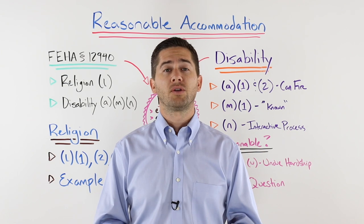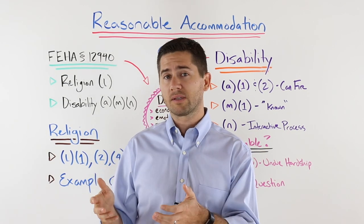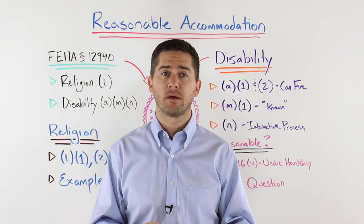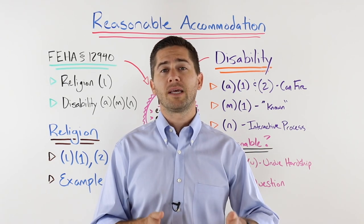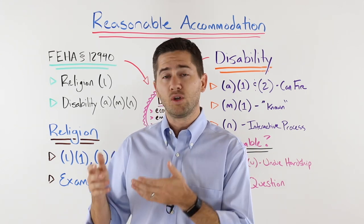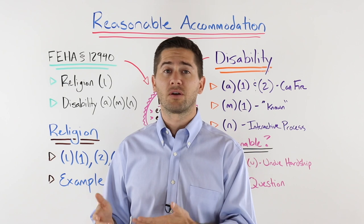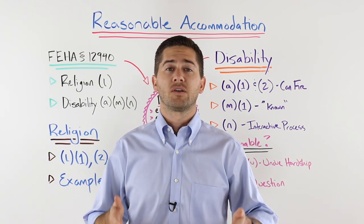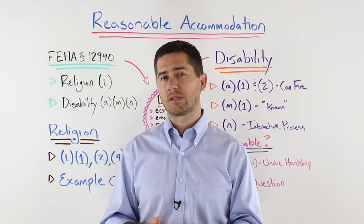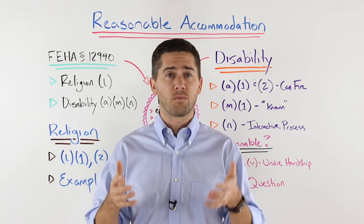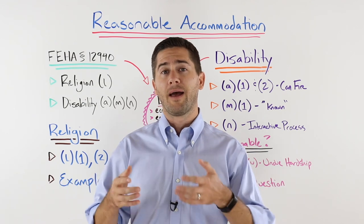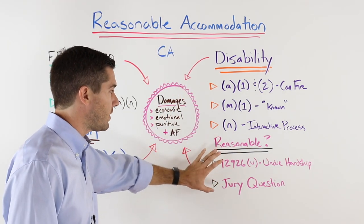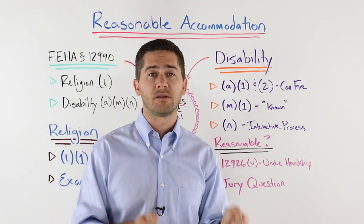For example, a request to a multi-billion dollar company for a $500 chair specifically to help your disability is probably reasonable. But that same request to a company with two employees that's losing money every year as a startup might not be reasonable — it really depends on the circumstances. Think hard about what your requested accommodation is, consult with your doctor about the best and easiest way for the employer to accommodate, then request it with a doctor's note to back you up. It makes it far more likely a jury will find it reasonable if a doctor asked for it and it won't cost a lot of money.